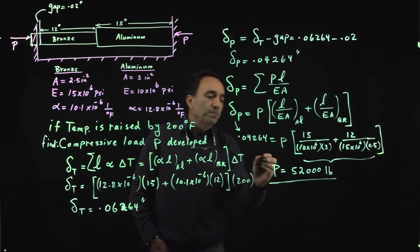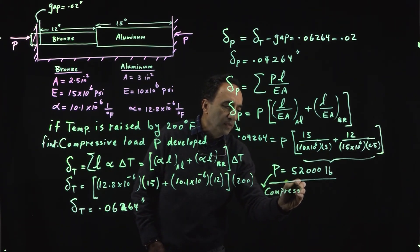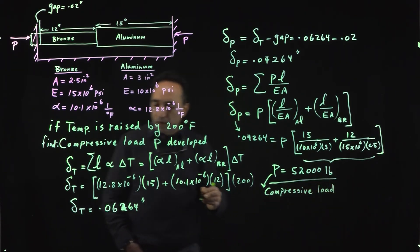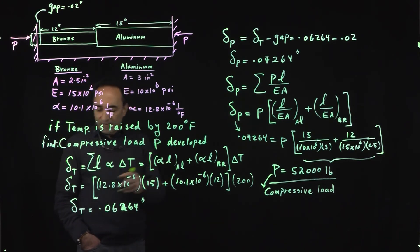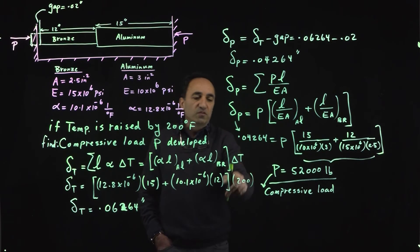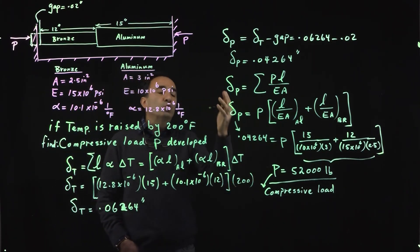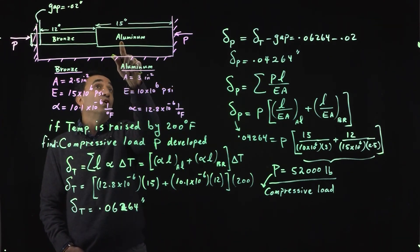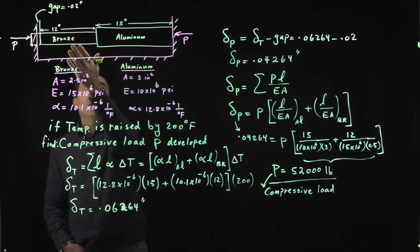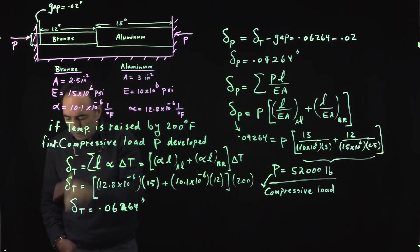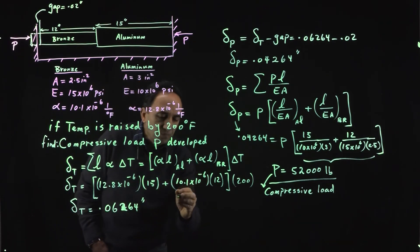P comes out to be exactly 52,000 pounds, which is really nice. That's the compressive load developed. I have a second part to this problem. I didn't want to mention it at the beginning so I didn't want to clutter your mind. Now that you know what the compressive load is due to this temperature rise, what would be for example the final length of the aluminum or the bronze.